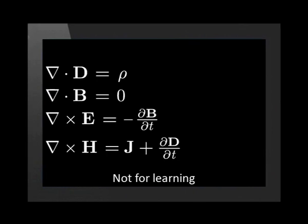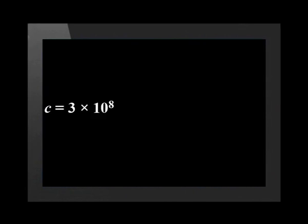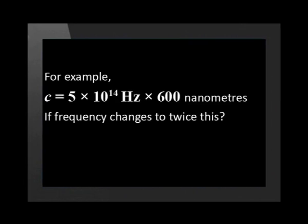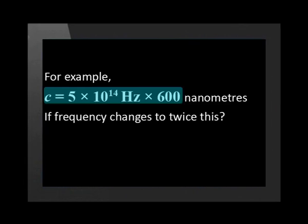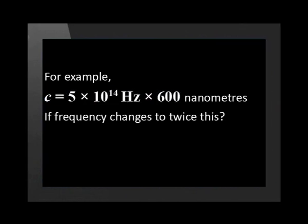Maxwell's equations predicted that there are electromagnetic waves at all frequencies at which an electron can vibrate. Scientists set to work to find these other waves and soon began to arrange them in terms of their frequencies. Let's recall the relationship between frequency and wavelength. The speed of the electromagnetic wave is constant — it is c, the speed of light. For example, if the frequency is 5 times 10 to the power 14 Hz, then c equals 5 times 10 to the power 14 Hz times 600 nm.